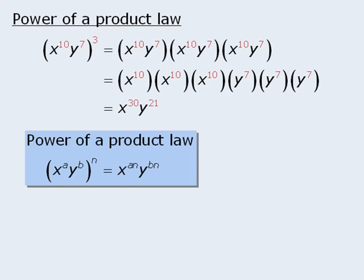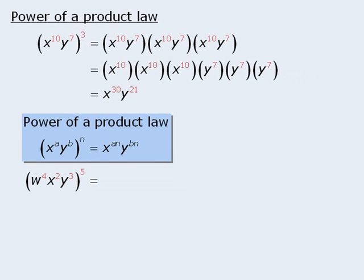We can generalize these results as follows. If we are raising a product to a certain power, let's say n, then to simplify this, we multiply n by the exponents within the product. For example, to simplify this, we take the 5 and multiply it by the exponent 4 to get w to the power of 20. Then we multiply 5 by 2 to get x to the power of 10. And finally, we multiply 5 by 3 to get y to the power of 15.